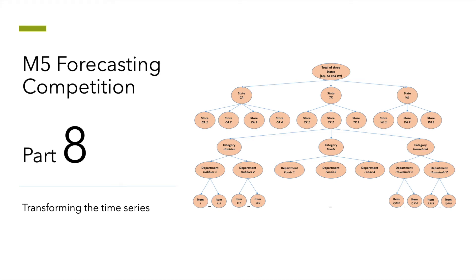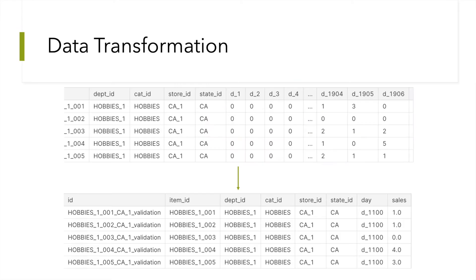Welcome to part 8 of the series on the M5 forecasting competition. In this video, we're going to transform the time series data in order to make each data point more informative. Instead of having each level 12 series in one row, we're going to create a row for each day of each level 12 series and build features around that date. We're also going to build a local validation set into the pipeline so that we can get feedback using the leaderboard loss function but without submitting.